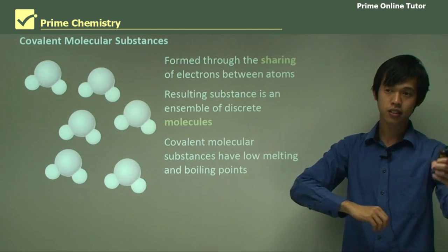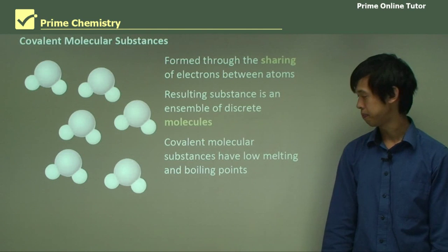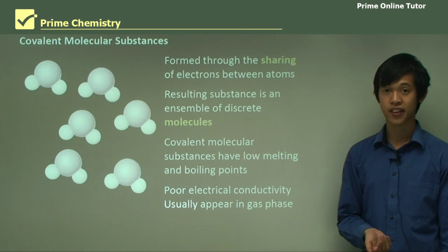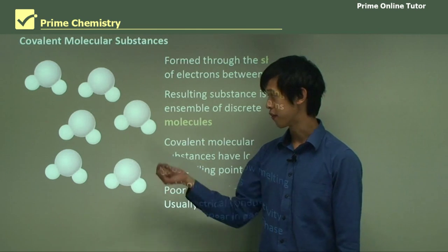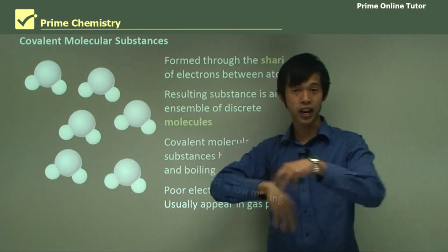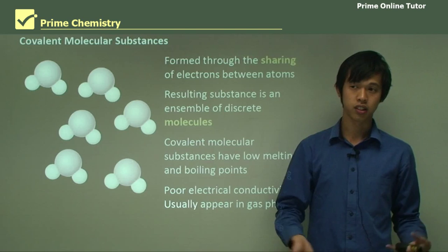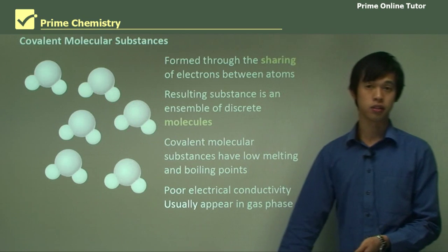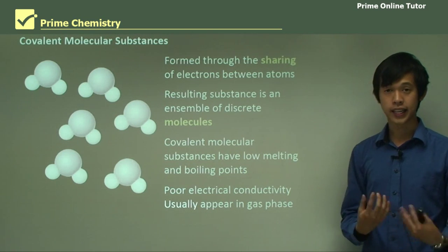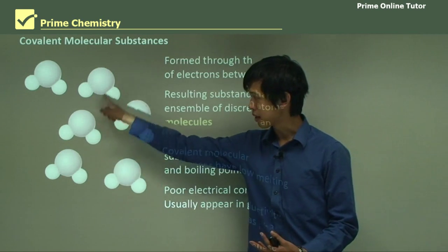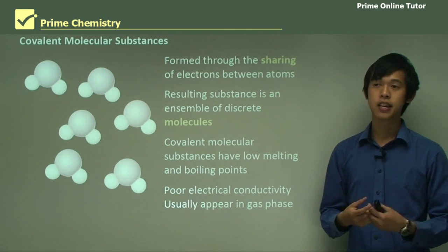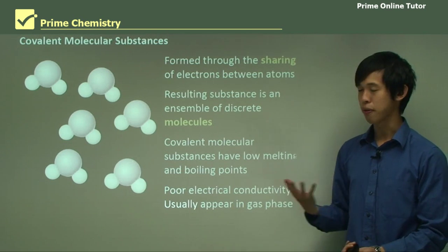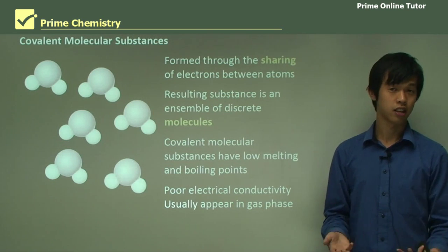Each molecule is free to move around by itself, bouncing around freely. Covalent molecular substances have poor electrical conductivity and usually occur in the gas phase. The poor electrical conductivity comes from the fact that all of these molecules are electrically neutral, so even if they are moving there's no charge — they don't conduct electricity. There are no free electrons because they're all locked up in covalent bonds. They exist as gases because the bonds between molecules are so weak that very little energy makes them go flying off in all different directions.